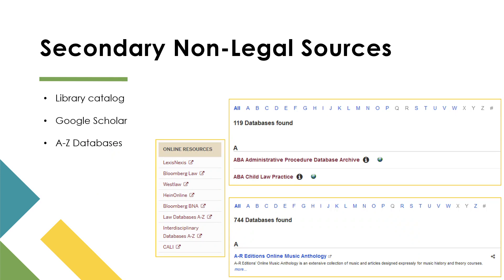Don't rely just on Google, though. It's possible that the search engine doesn't find something that's on a database, and you have access to hundreds of legal and interdisciplinary databases on the homepage of the FSU Law Research Center's website. There are 119 legal databases that you have special access to as a law student and 744 interdisciplinary databases. On the interdisciplinary page, you can browse by subject to find relevant resources, many of which will let you use advanced terms and connector searching to maximize your results.